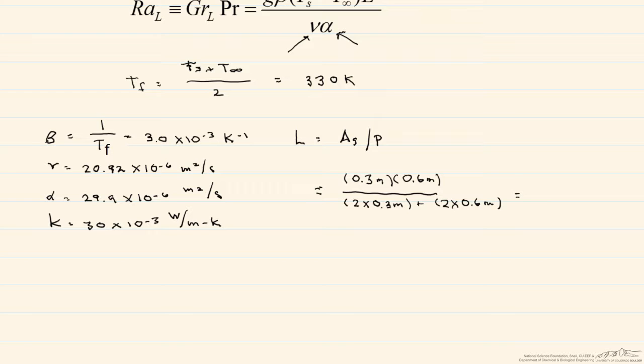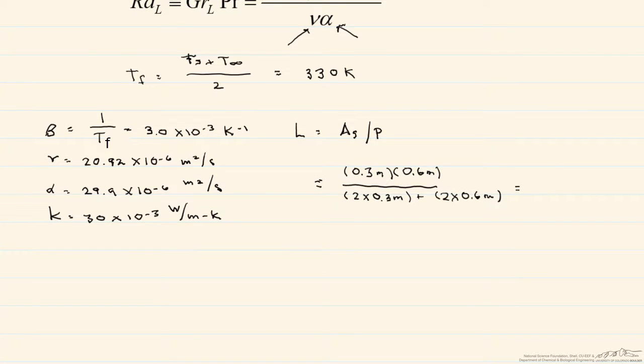When we look at this length, it's equal to 0.1 meter. For a vertical plate, the characteristic length is the height of the plate, which in that case was equal to 0.6 meters.